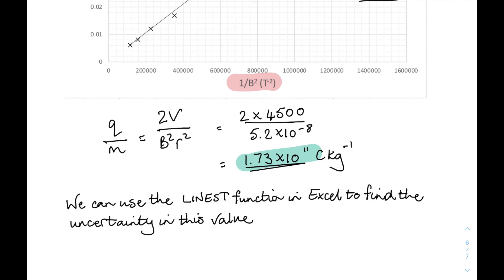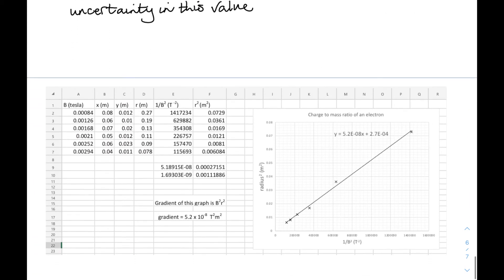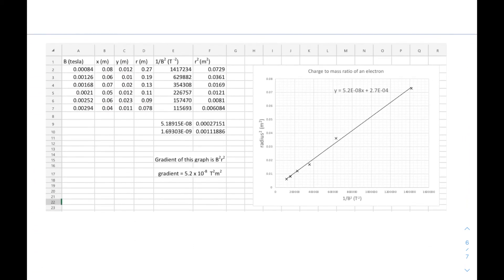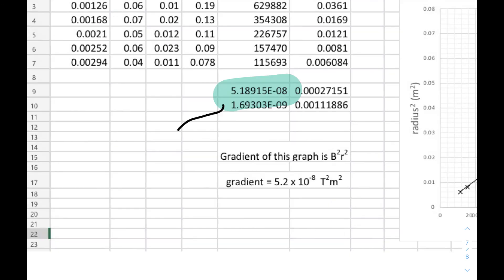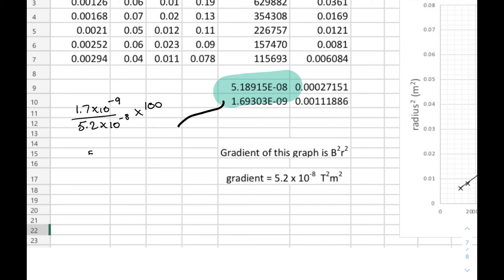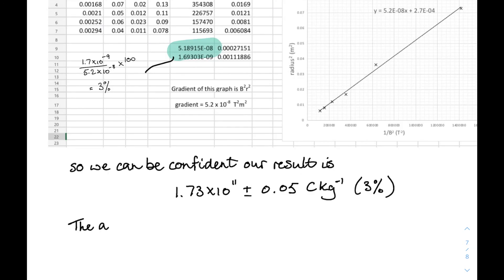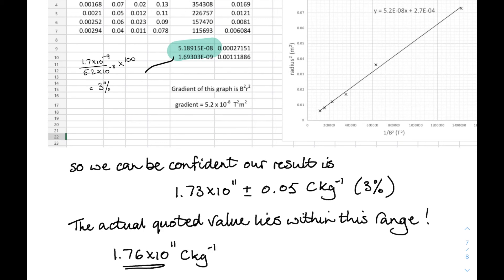And we can use the LINEST function in Excel. LINEST is a function that allows us to work out the uncertainty in the gradient. And there it is in those little four cells there. I'll just highlight there's the gradient and underneath it, the uncertainty in the gradient. Now I can work out that as a percentage. It works out to be 3%. So our value with its uncertainty ties in nicely with the quoted value of 1.76 times 10 to 11 coulombs per kilogram. There you go then. That's charge to mass ratio for an electron. Bingo!